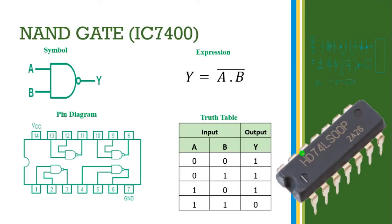This is the IC 7400. This is also a 14-pin IC — pins 1 to 7 on one side and 8 to 14 in reverse order. This is the DIP IC. The small cut is on this side; we are going to take this as the first pin.